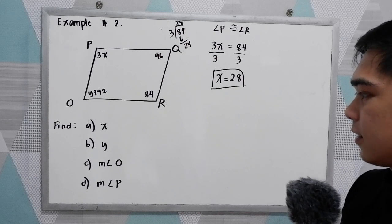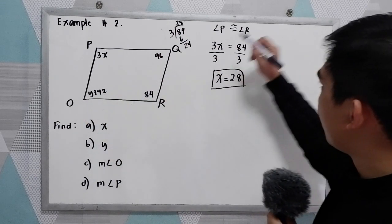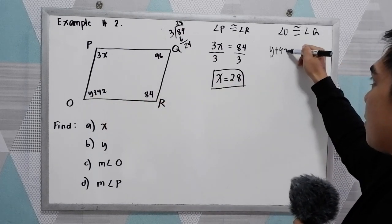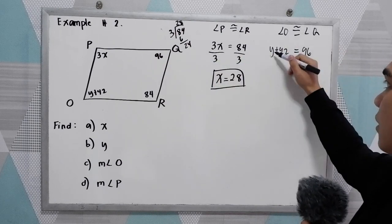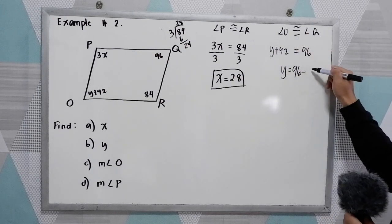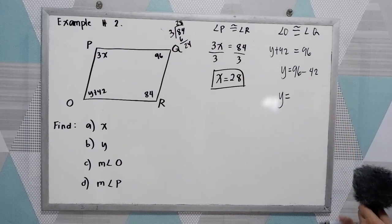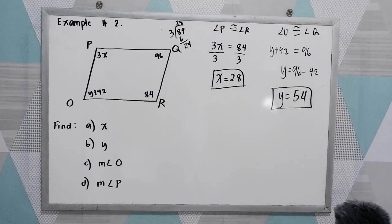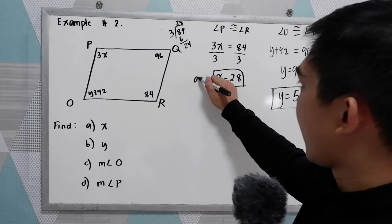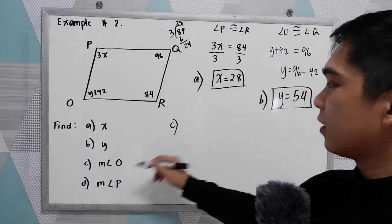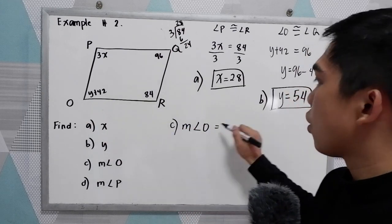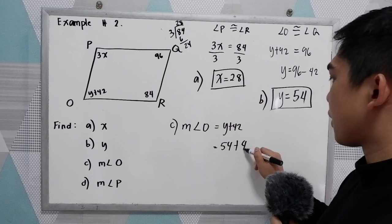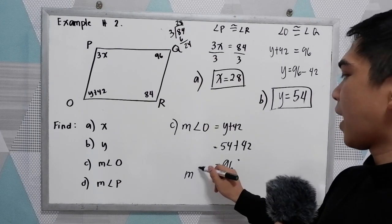Now we're going to find Y. Angle O is congruent to angle Q. Angle O is Y plus 42, which equals 96. So Y equals 96 minus 42, which is 54. Y is equal to 54. For letter C, measure angle O: in our given, angle O is Y plus 42. Substituting Y equals 54: 54 plus 42 equals 96 degrees. Measure of angle O is 96 degrees.